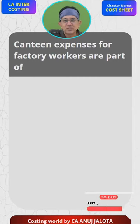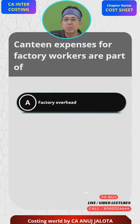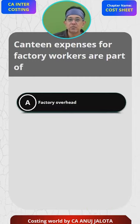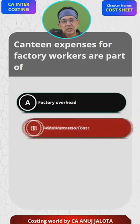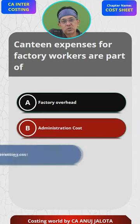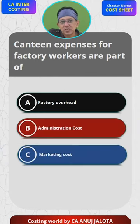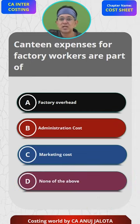Canteen expenses for factory workers are part of factory overheads — that is option A. Option B is administration cost, C is marketing cost, and D is none of the above. Let's see what the answer is.